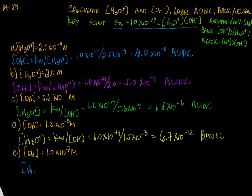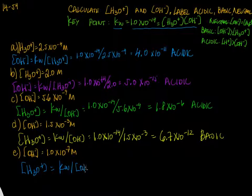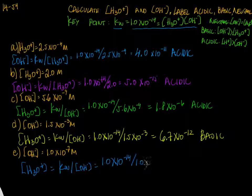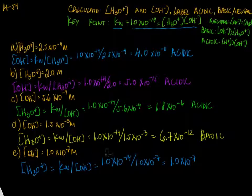In this last problem we're given [OH-] = 1.0×10⁻⁷. We solve for H3O+: [H3O+] = Kw / [OH-] = 1.0×10⁻¹⁴ / 1.0×10⁻⁷ = 1.0×10⁻⁷ M. The two concentrations are equal, so this is the only situation that gives a neutral solution. Thank you for watching.